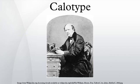Talbot made his first successful camera photographs in 1835 using paper sensitized with silver chloride, which darkened in proportion to its exposure to light. This early photogenic drawing process was a printing-out process — the paper had to be exposed in the camera until the image was fully visible, typically requiring an hour or more to produce an acceptable negative.